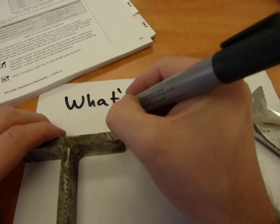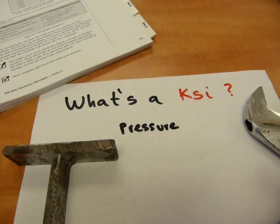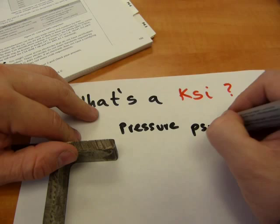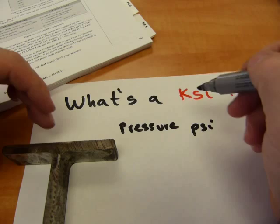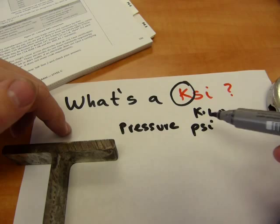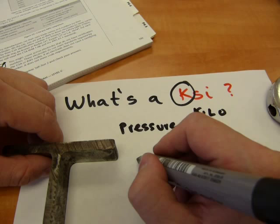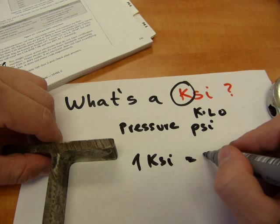A KSI is a unit of measurement of pressure. It's used in the U.S. customary or imperial systems, and it's very similar to PSI. So if you get PSI, you'll get KSI. The interesting thing about KSI is that it's got the letter K in it, which stands for kilo. So a KSI is a kilo PSI. A kilo is short for a thousand, borrowing from the metric terminology. So one KSI is a thousand PSI.